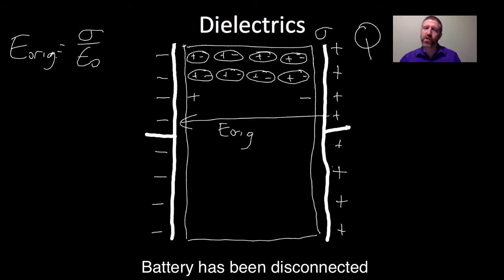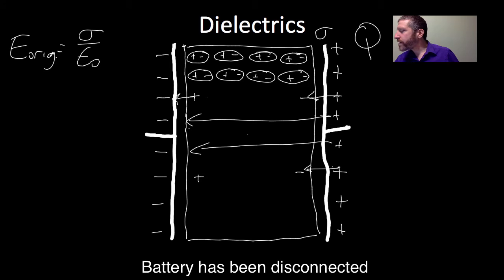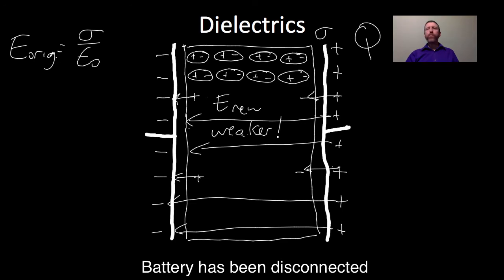But because of these induced charges, and they really are induced there, there's a counter field like this. So the field gets actually weaker inside here. Now this is not as much charge induced. It's not the same amount of charge as some capacitor plate. It's a fraction of that. So some of these field lines just end there, and that one goes to there. The rest may get through. This is just to show that the field is now weaker. Field in here, E new, is weaker.